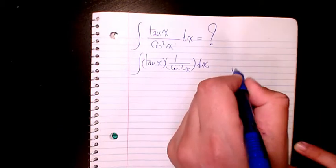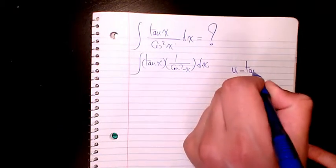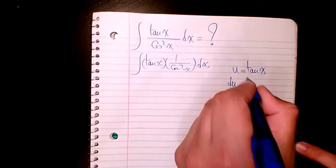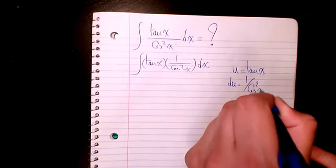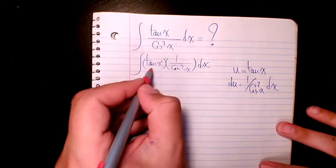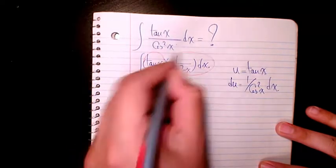substitution method and consider u as tan x. So du will be the derivative of tan x which is going to be one over cosine squared x dx. So then I can say this part is u, this part is du.